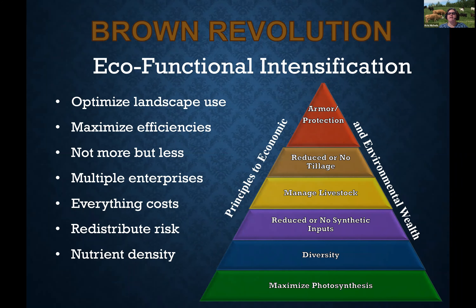We're going to redistribute that risk and at the same time improve nutrient density. So we talked about maximizing photosynthesis — having a continuous influx of food, that grazing type of idea. We talked about diversity — having diverse crop rotations to stimulate diversity of above-ground and below-ground life. We want to have the armor or protection on the soil surface. We also want to reduce or eliminate tillage as another layer of protection so we don't get the soil disturbance that happens with tillage. And we want to manage livestock because that's going to help us manage that carbon flow below ground.